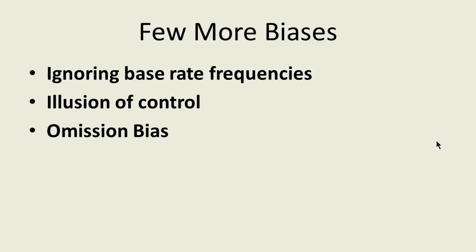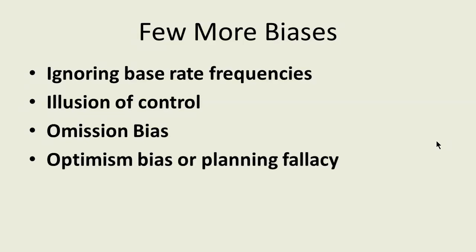What would be better — to observe a potential problem in a project and do nothing, or actually be the cause of the problem? In both cases, the result will be the same: the project will be behind schedule. Optimism bias, or planning fallacy: people tend to be over-optimistic about the outcome of planned actions. Finally, overconfidence: people tend to over-estimate the accuracy of their predictions.